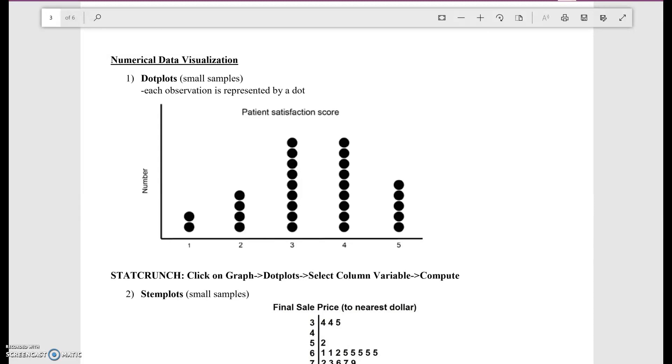So now this is going to be numerical data visualization. There's three different types of ways that you can represent numerical data. One of the easiest ways is dot plots. These are usually done for small samples. Basically, each observation is represented by a dot.